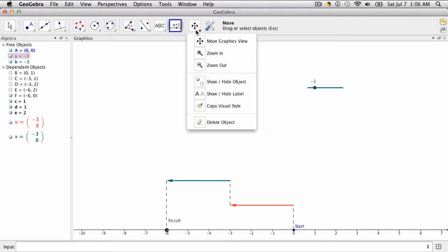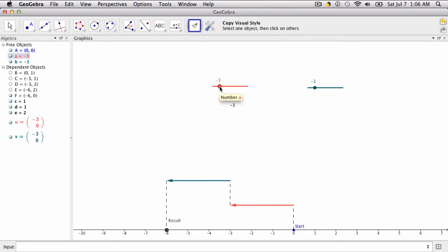I want them to look the same, so I'm going to click copy visual style, click this and that, so they're both the same color, and I can move on now.